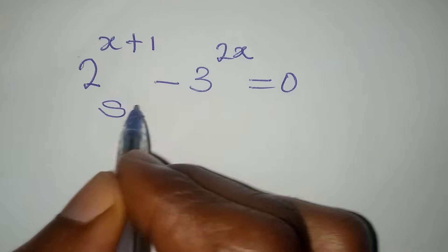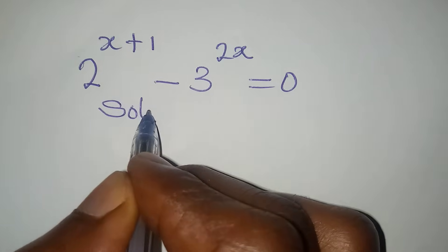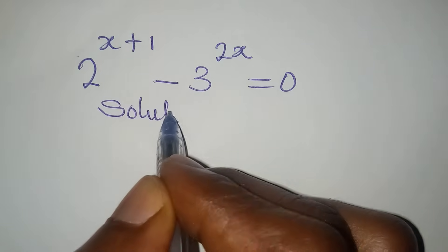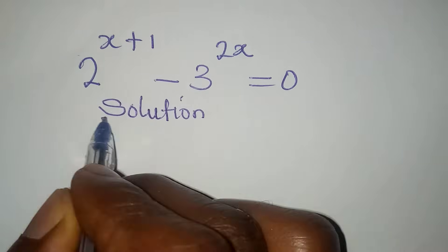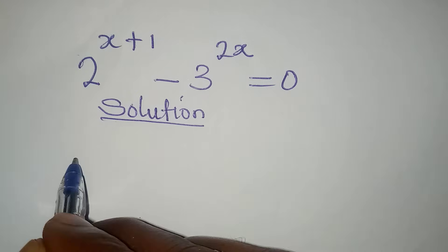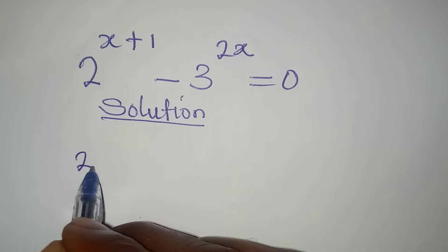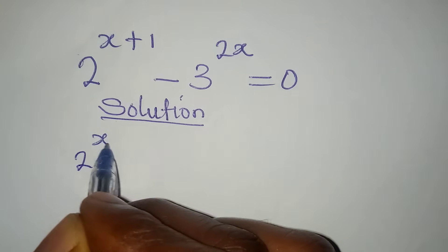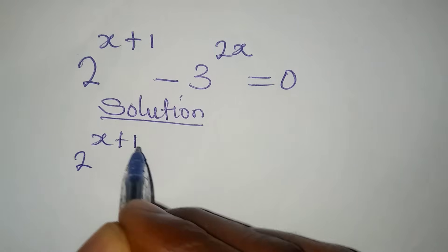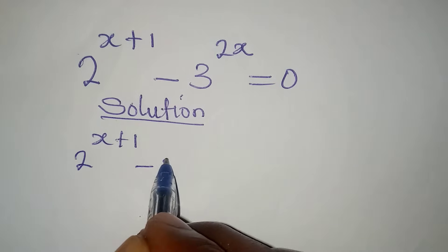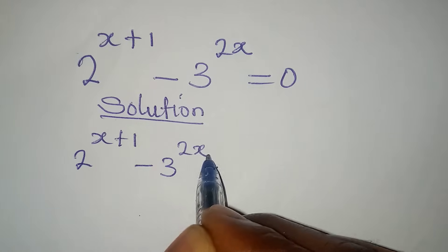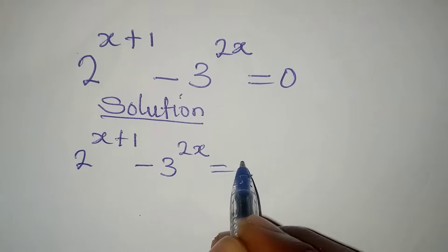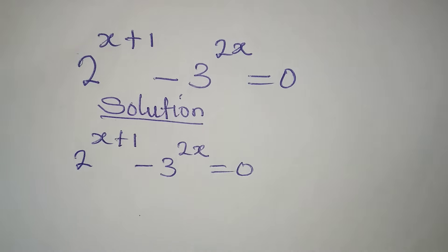Hello everyone, let's solve this olympiad mathematics problem. We have 2 to the power of x plus 1, minus 3 to the power of 2x, equal to 0.